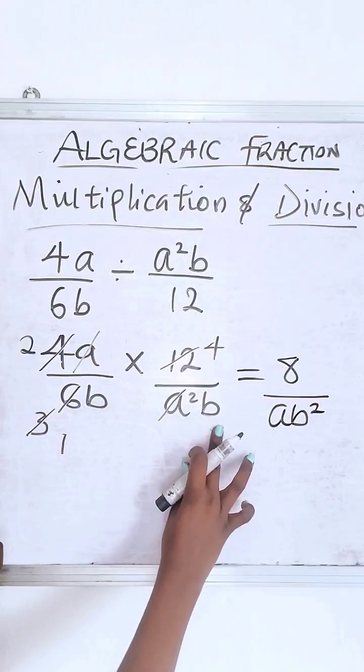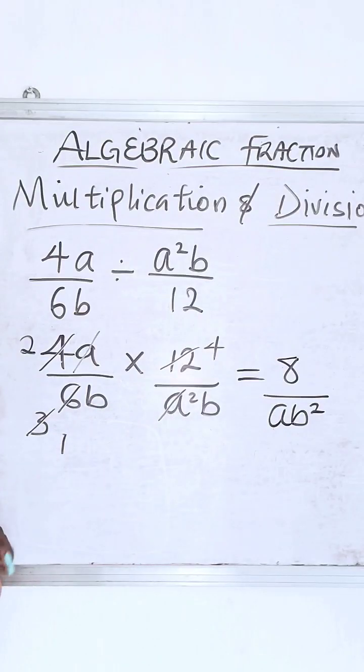B times b is b square. If this is too confusing, this is the next person, you can do it.